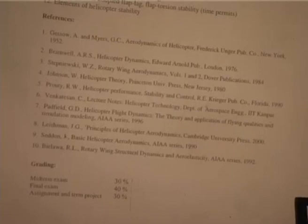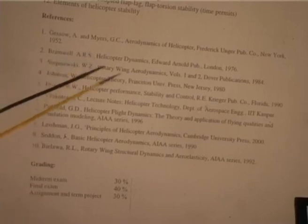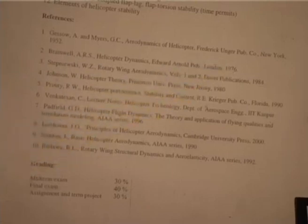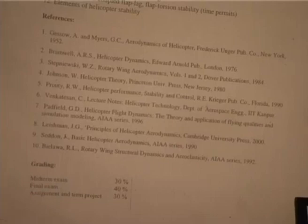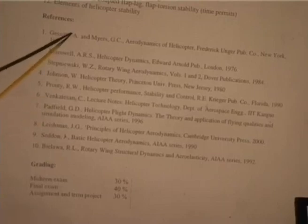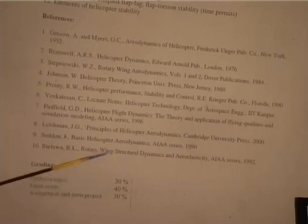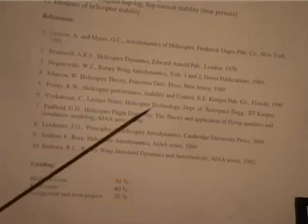The first book is Gessow and Myers' Aerodynamics of the Helicopter, which is from 1952. It is available in the library and is out of print, but it is a good book — very good for a beginner. The second book is Bramwell, 1976, published in London. It is difficult to follow, but has a lot of information. Towards the end, you sometimes will not know how the various expressions are obtained.